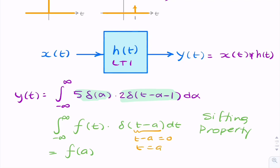t equals a, and that's the value that goes in there. So that was called the sifting property.